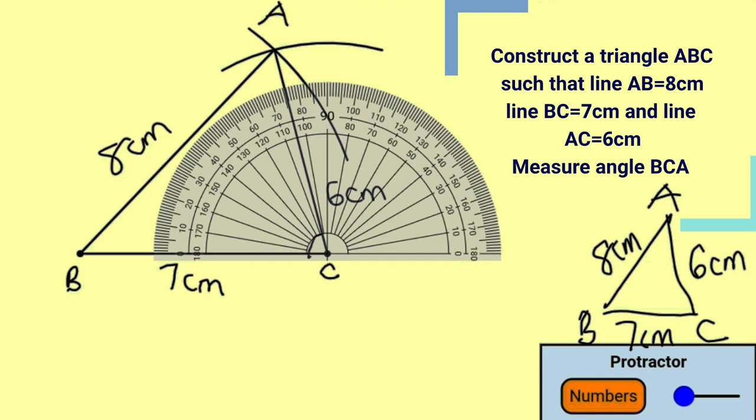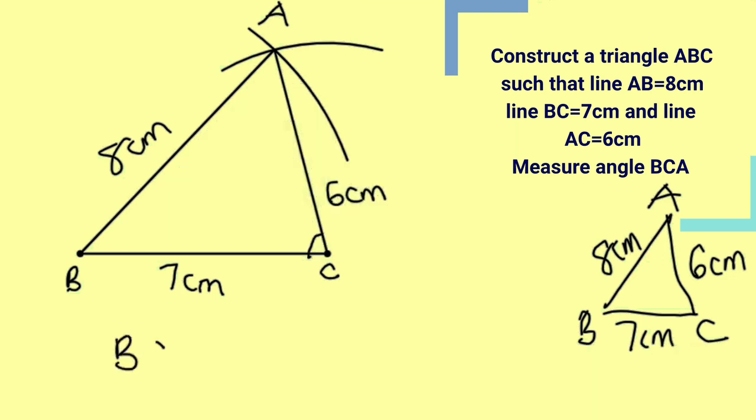Now we are going to measure the angle clockwise, using the external angles. So this angle is 76, angle BCA is equal to 76 degrees.